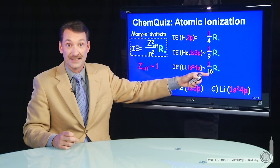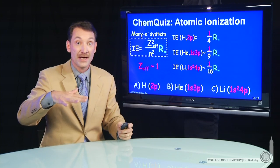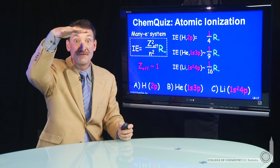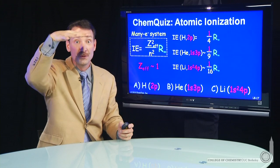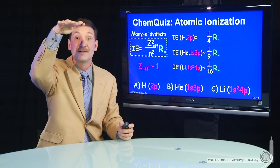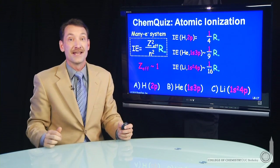So lithium, very easy to ionize, a sixteenth of a Rydberg. That 4p level very close to within a sixteenth of zero, the ionized state.